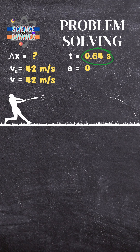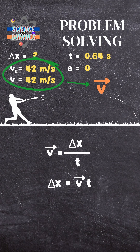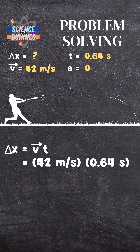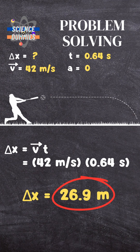Notice that the velocity is constant because a is 0. For this part, we'll simply treat 42 meters per second as the average velocity and derive delta x from this equation. Plug the values in, simplify, and we end up finding the ball traveled 26.9 meters horizontally.